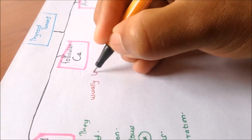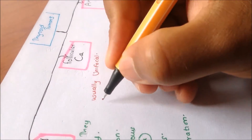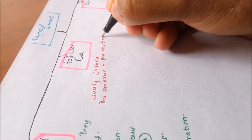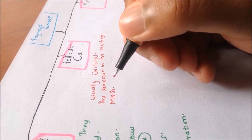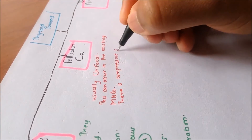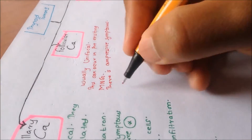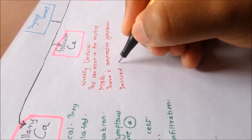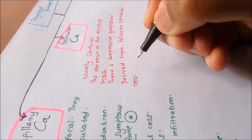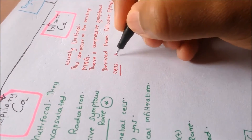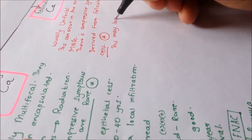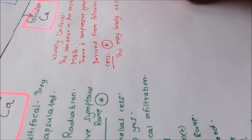Follicular carcinomas are usually unifocal. This cancer can occur in pre-existing multinodular goiters and is very common in endemic goiter areas. These patients always present with compressive symptoms, such as difficulty in breathing. This cancer also has a follicular epithelial cell origin and is the second most frequent thyroid cancer, with around 20% distribution.